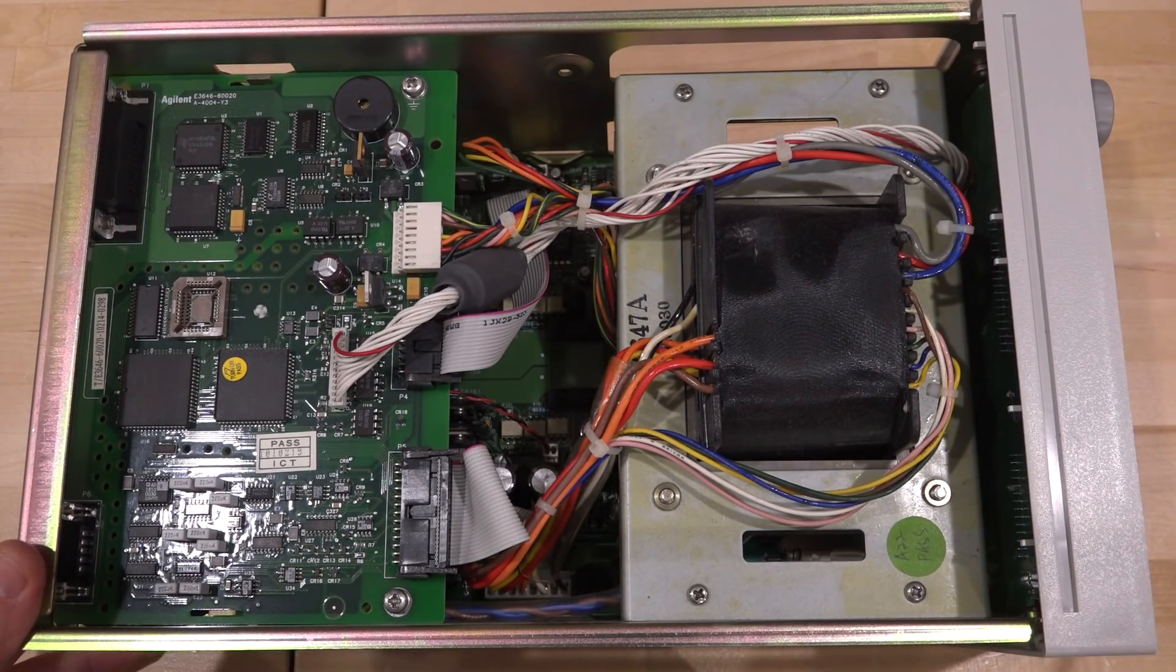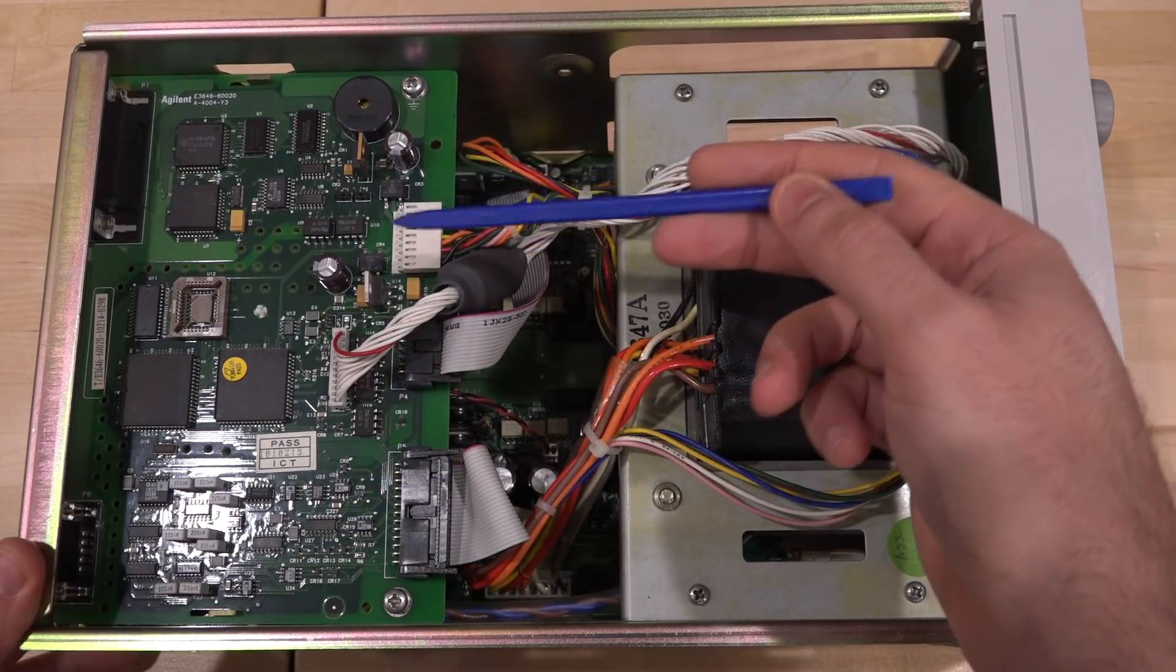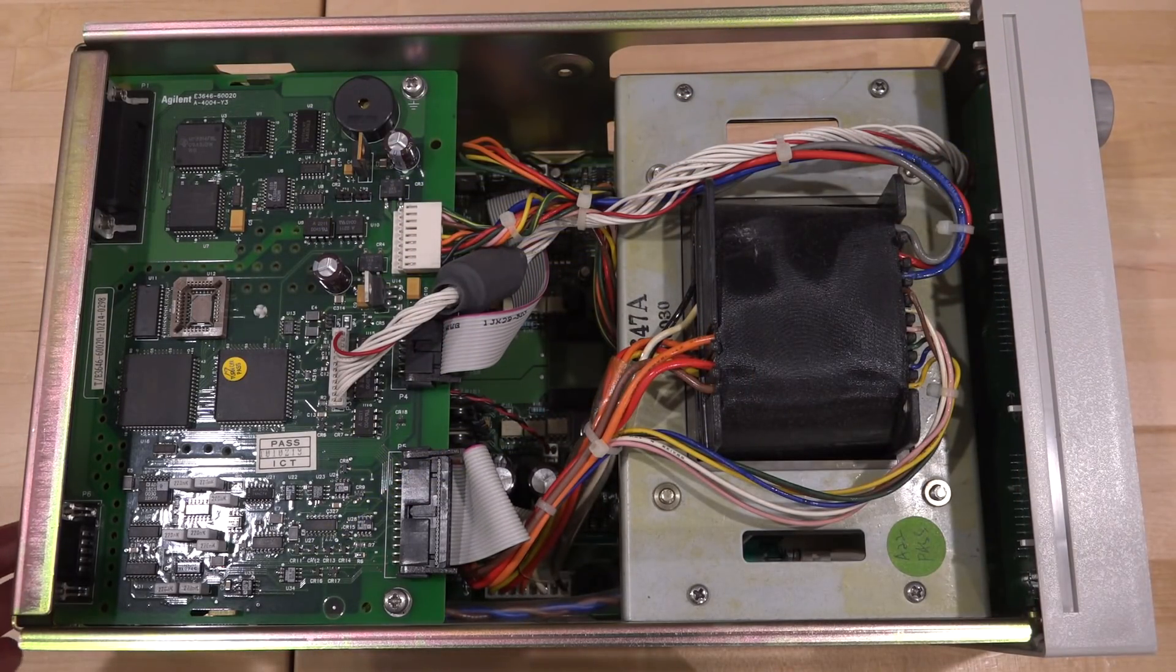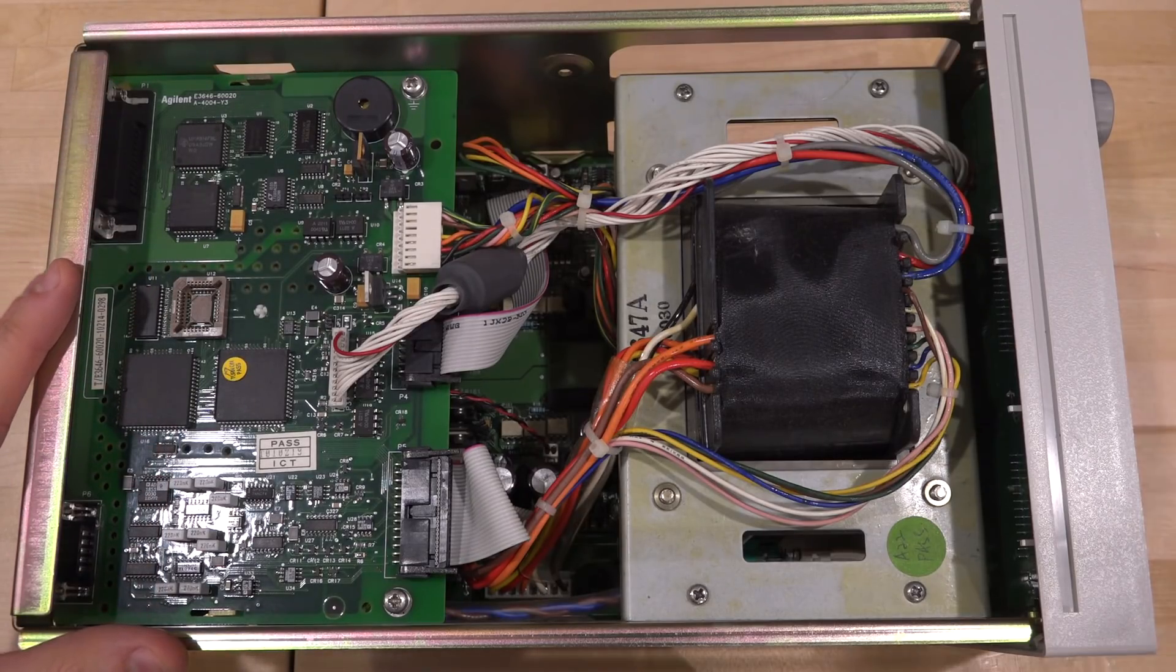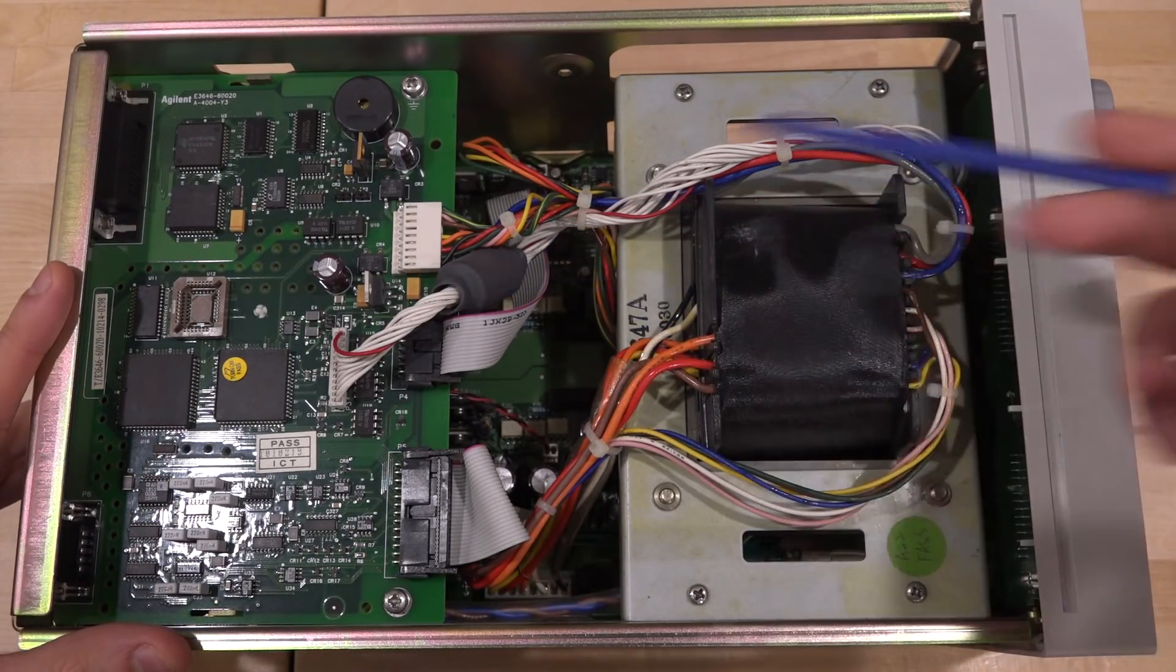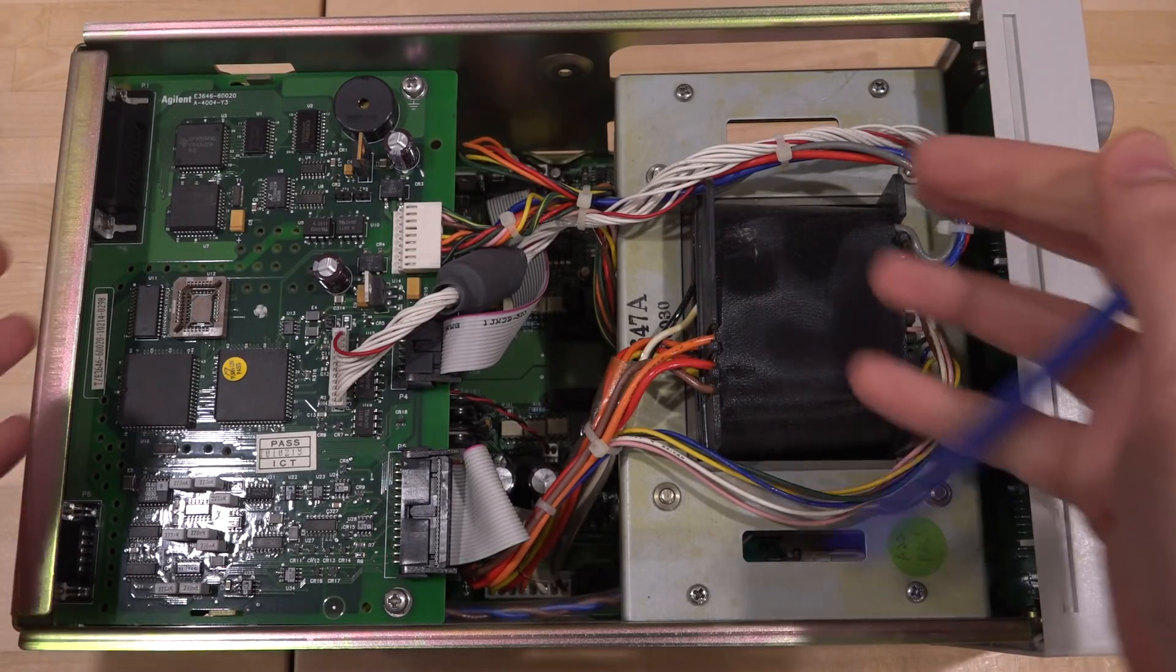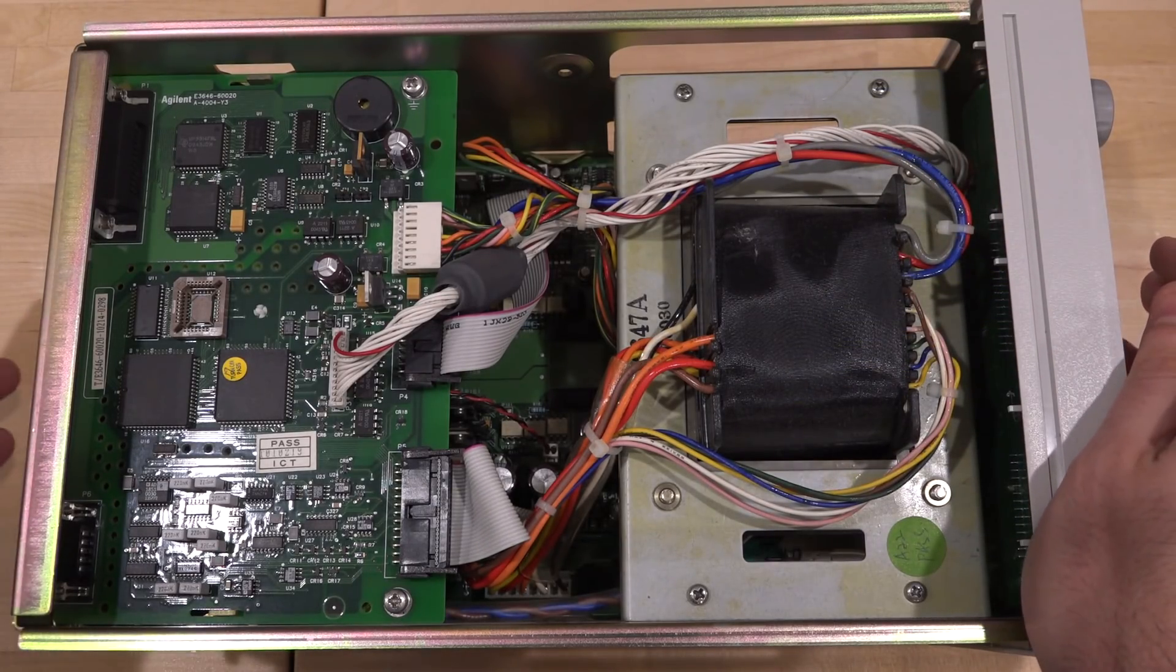There's a main board over here. This main board controls essentially everything - the GPIB, serial port is here, all the digital is here, all the actual power supply stuff is down there, and it interfaces with these cables. This is a pretty complicated unit, really. I would say in some ways even over-engineered.